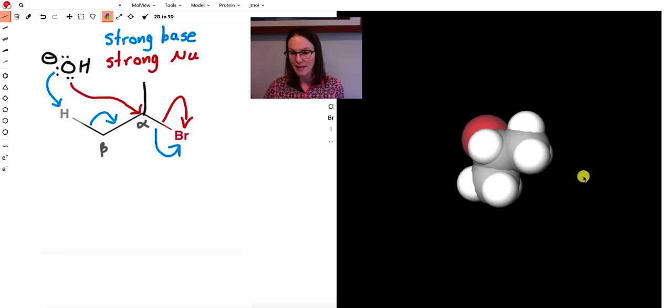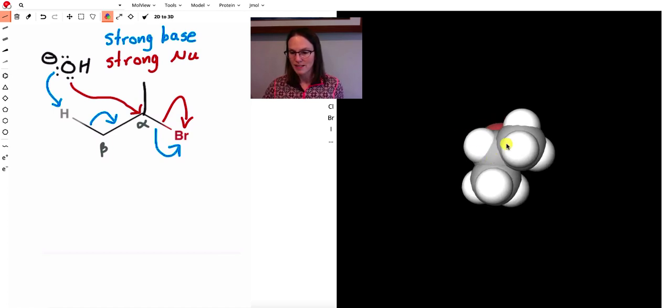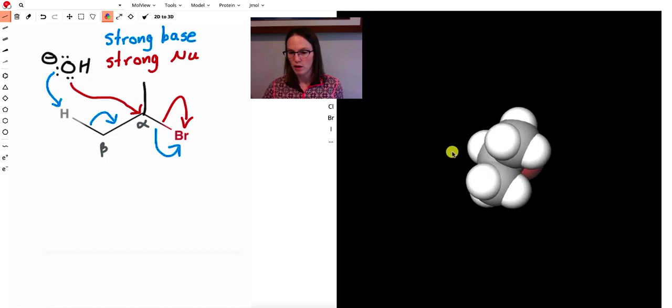So now the space anti-periplanar to the leaving group is getting a little bit more crowded. So there's the bromine leaving group, there's that space there, and there's all these different groups around it now.